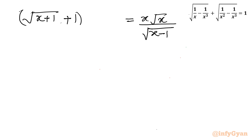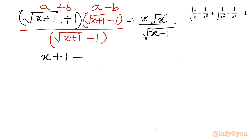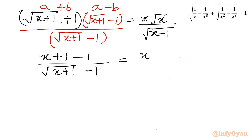So I will multiply the left side by square root of (x + 1) minus 1 over square root of (x + 1) minus 1. You can see it is of the form (a + b)(a − b), so we apply the difference of two squares identity. This gives x + 1 minus 1, which simplifies, divided by square root of (x + 1) minus 1, equal to x root x over square root of (x − 1).